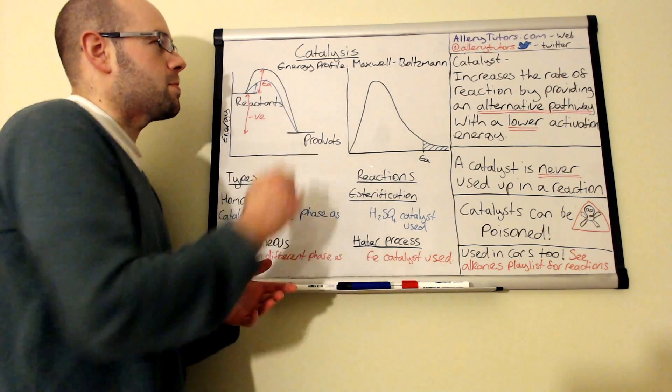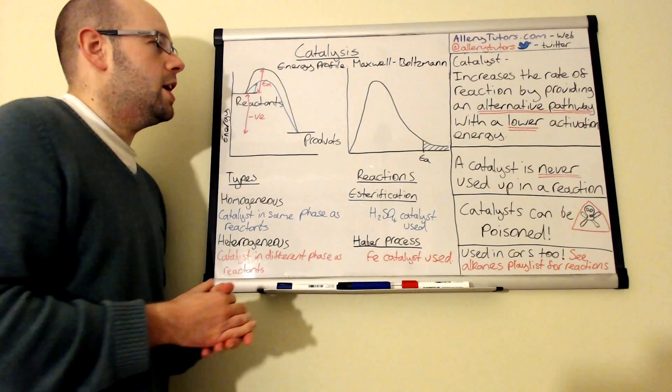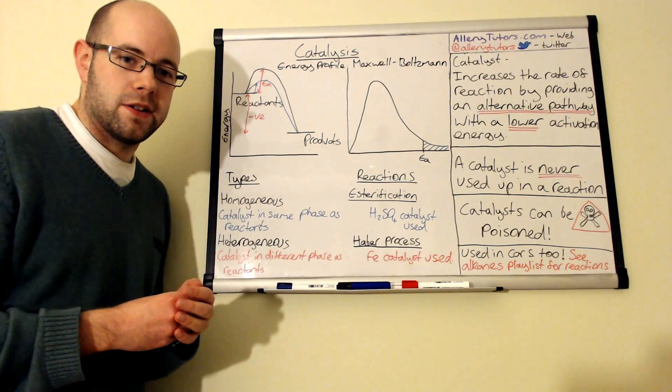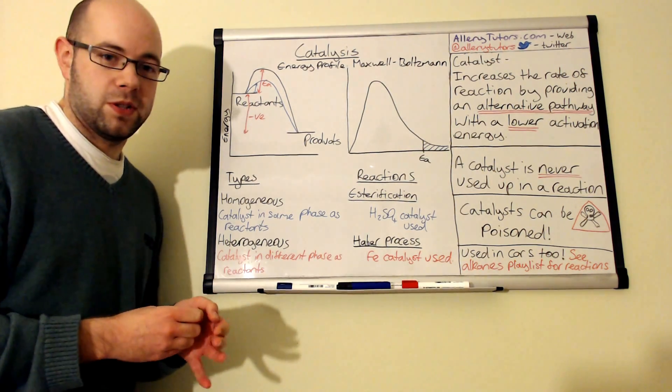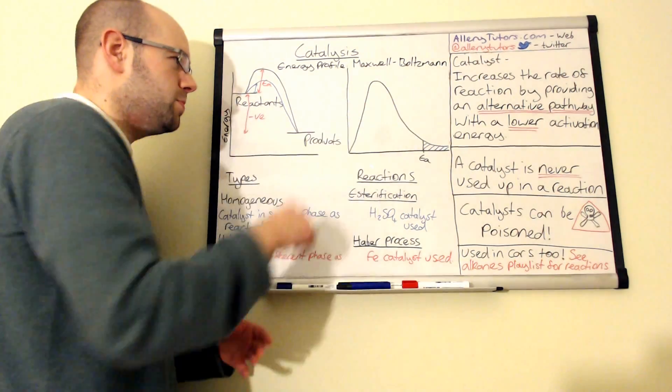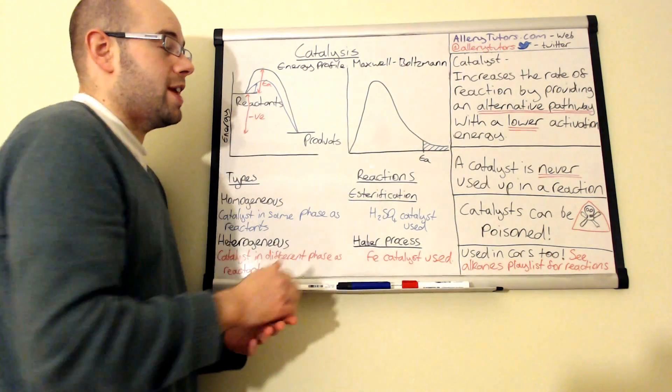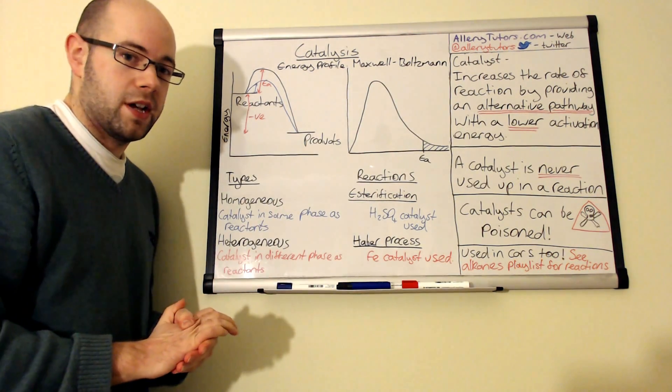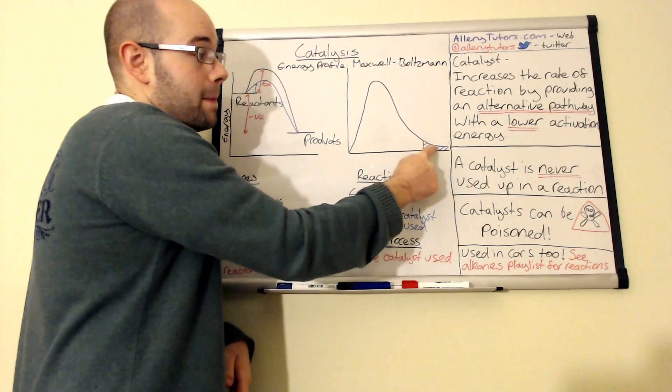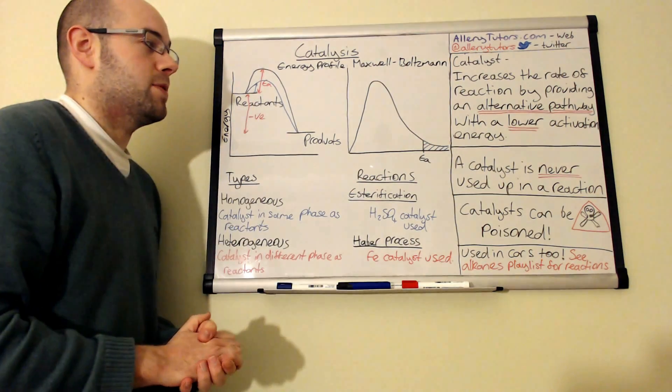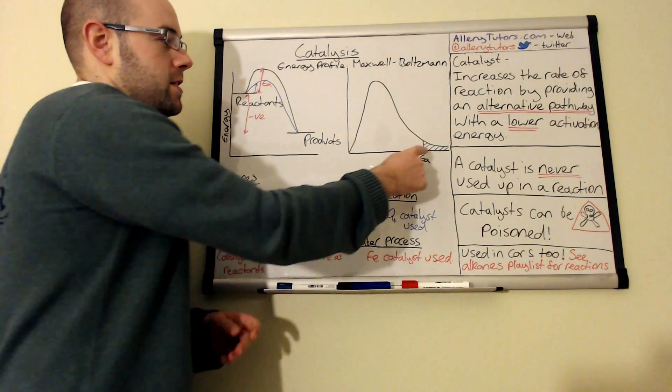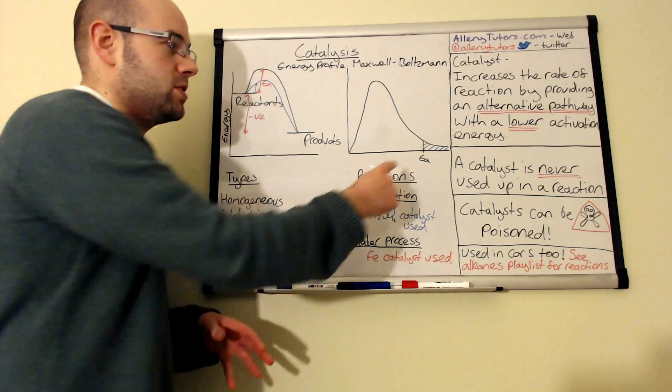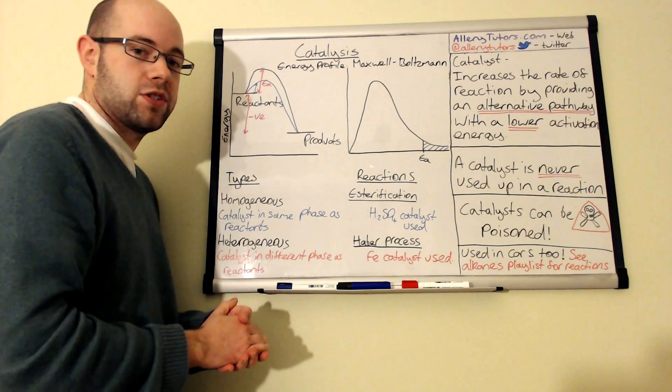In terms of the Maxwell-Boltzmann distribution—if you're not sure what the Maxwell-Boltzmann distribution is, just click on the link below and you can find out more. I'll assume you know what it is. This shows you the energy of particles in a reaction, and the last bit here tells us the energy that the particles have that allow them to collide and actually react. This is above the activation energy.